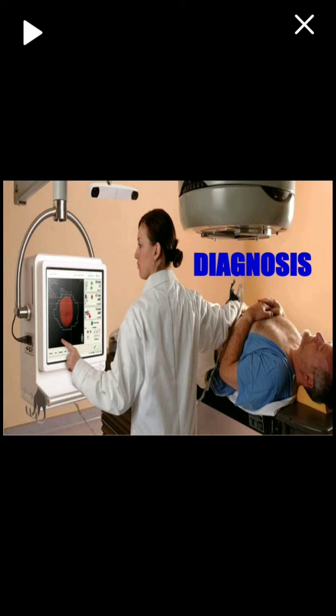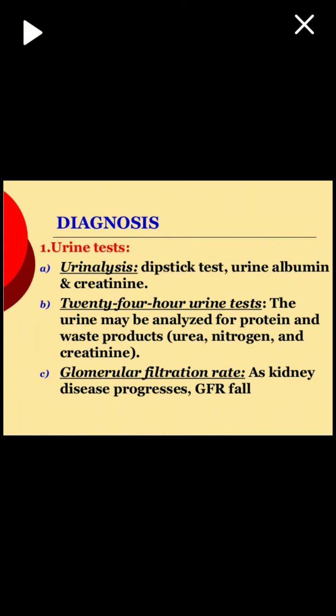Diagnosis of chronic kidney disorder: the first test is urine analysis using dipstick methods, urine albumin-to-creatinine ratio, and 24-hour urine test. The urine is analyzed for protein and waste products like urea nitrogen and creatinine. GFR — glomerular filtration rate — is key; as kidney disease progresses, GFR falls. Using GFR, we can stage kidney disease from stage 0 to stage 5.